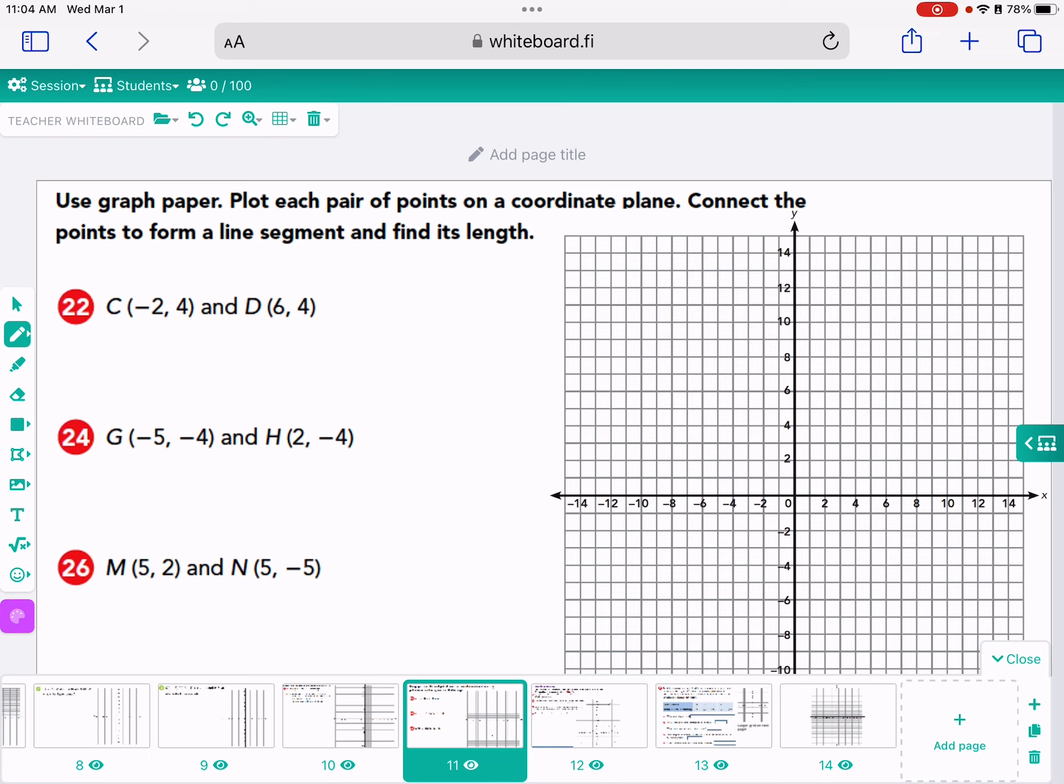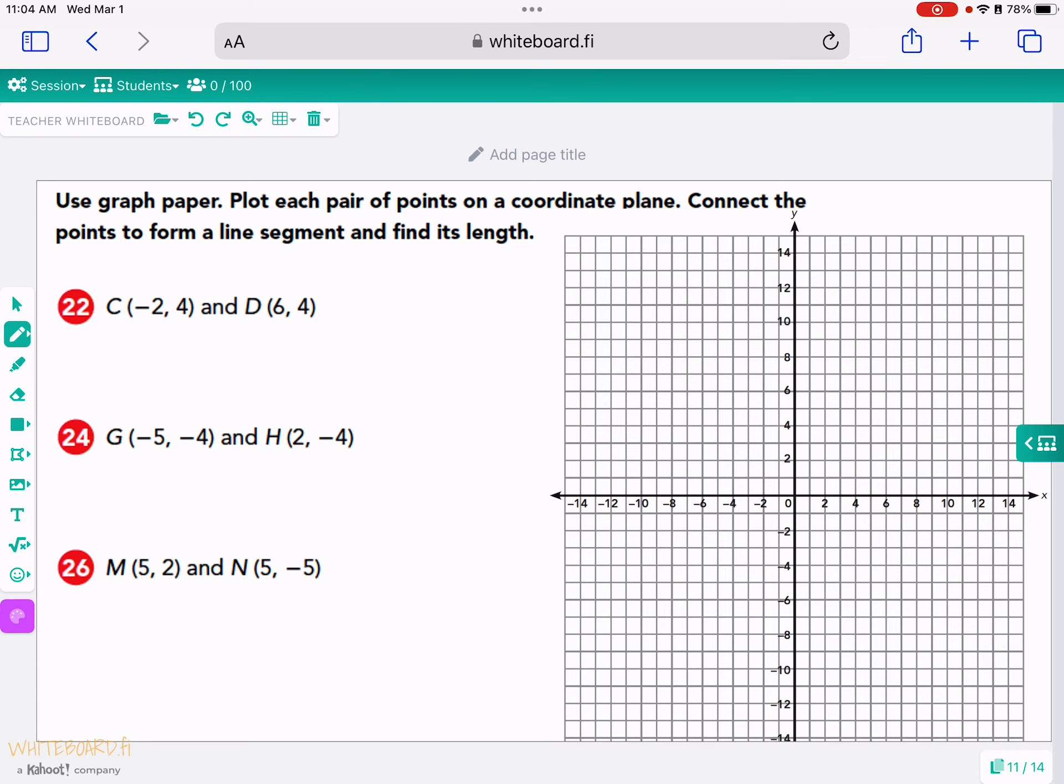So for the first one in 22, we have C, negative 2, and 4. So the first number in any ordered pair is always the X coordinate and the second number is always the Y coordinate, right? So we're going to negative 2 and then up to 4. So this is C. And D is 6, 4. So that's located here.